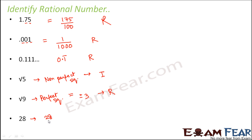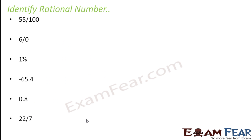28 is nothing but 28 by 1, which is in the form p by q with q not equal to 0, so it is a rational number. 55 by 100 is directly in the form p by q with q not equal to 0, so it is rational. 6 by 0: although it is in the form p by q with integers, here q equals 0, therefore this is not a rational number — it is irrational.